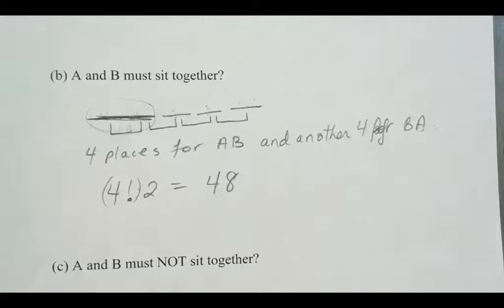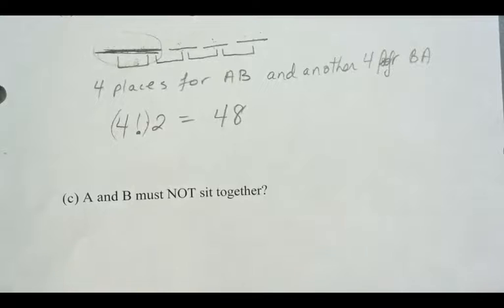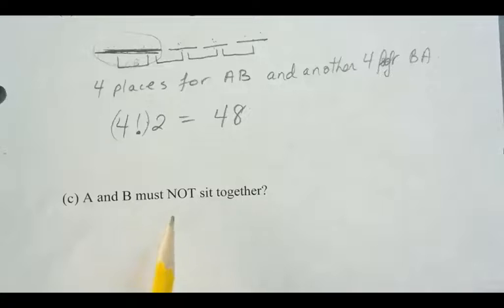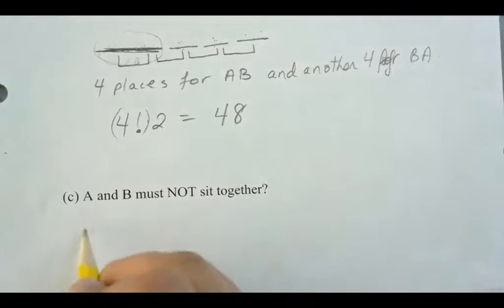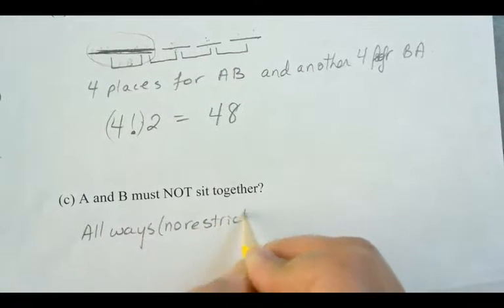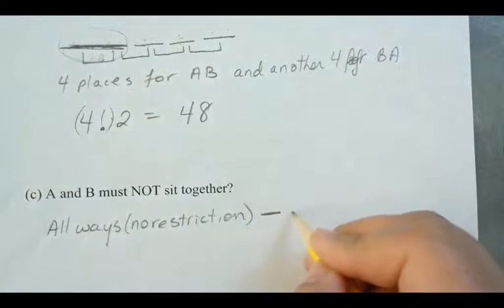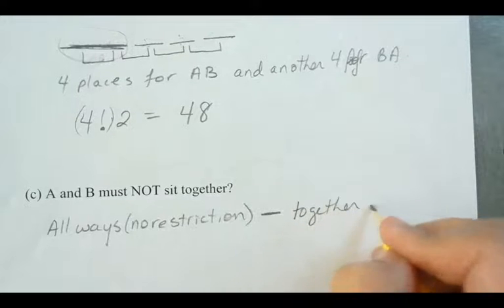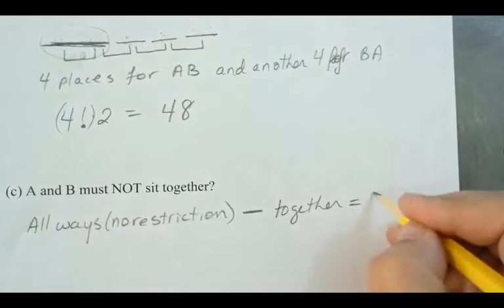Now A and B have had a huge fight — they broke up and do not want to sit next to each other at all. Instead of counting all the ways they don't sit together directly, we use the complementary approach: take all ways with no restriction and then subtract the ways that A and B sit together.